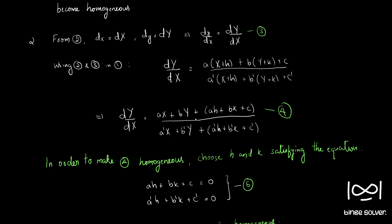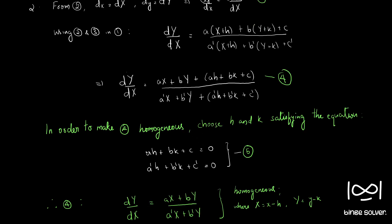If you observe, nothing much has changed in this new equation. But if we choose h and k such that ah + bk + c equals 0 and a'h + b'k + c' equals 0, our equation 4 will reduce to a homogeneous equation. So choosing h and k, we write two equations: ah + bk + c = 0 and a'h + b'k + c' = 0. Let's call this equation 5. We have two variables h and k and two equations, so we should be able to solve them to find the values of h and k.